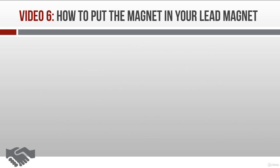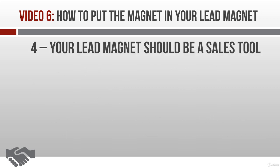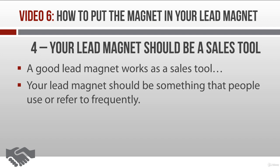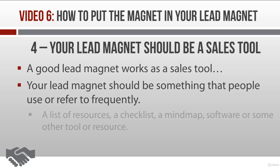The fourth tip for attracting prospects is to create a lead magnet product that works as a sales tool. The whole reason for your lead magnet product to even exist is to attract people to your site and get them on your mailing list. But a good lead magnet also works as a sales tool, and a good sales tool has two key characteristics. First, ideally your lead magnet should be something that people use or refer to frequently — it could be a list of resources, a checklist, a mind map, software, or maybe some other kind of tool or resource. These things work well because people use them often, and that means they're going to see your calls to action often as well.